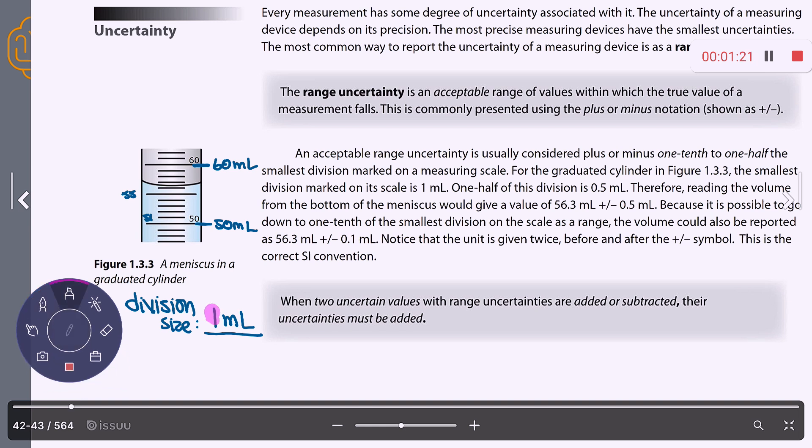Hang with me for a second. I'm highlighting this and the reason I'm highlighting this is because I want you to be aware that this is the one's place. It's important for us to know that because this tells me when I go to record my volume, how many places beyond the decimal I have to record my measurement. So when you look here, if this is 55, then the next line is 56 and my meniscus is between 56 and 57. Agreed?